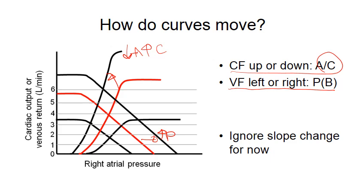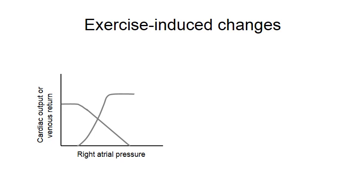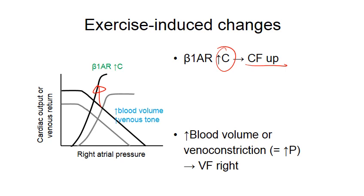Let's consider exercise-induced changes to these two curves. First, exercise triggers the sympathetic activation of beta-1 adrenergic receptors in the heart, which increases contractility that shifts the cardiac function curve up like that. Second, the available blood volume is increased due to venoconstriction happening during exercise, and this increases the preload and shifts the vascular function curve to the right.